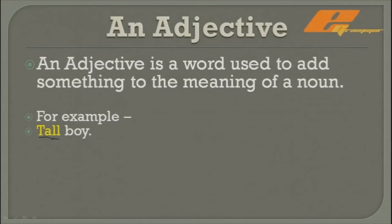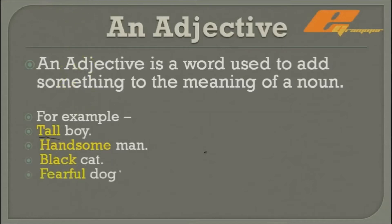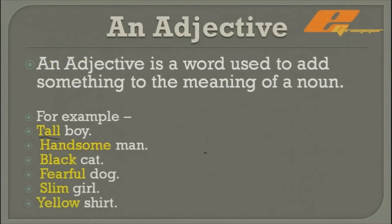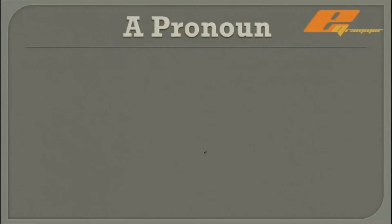See another example: 'handsome man.' Here, 'handsome' is an adjective and 'man' is a noun — we are getting more information about the noun 'man' through the word 'handsome.' Anything in a sentence which gives more information about a noun is an adjective. More examples: black cat, fearful dog, slim girl, yellow shirt.